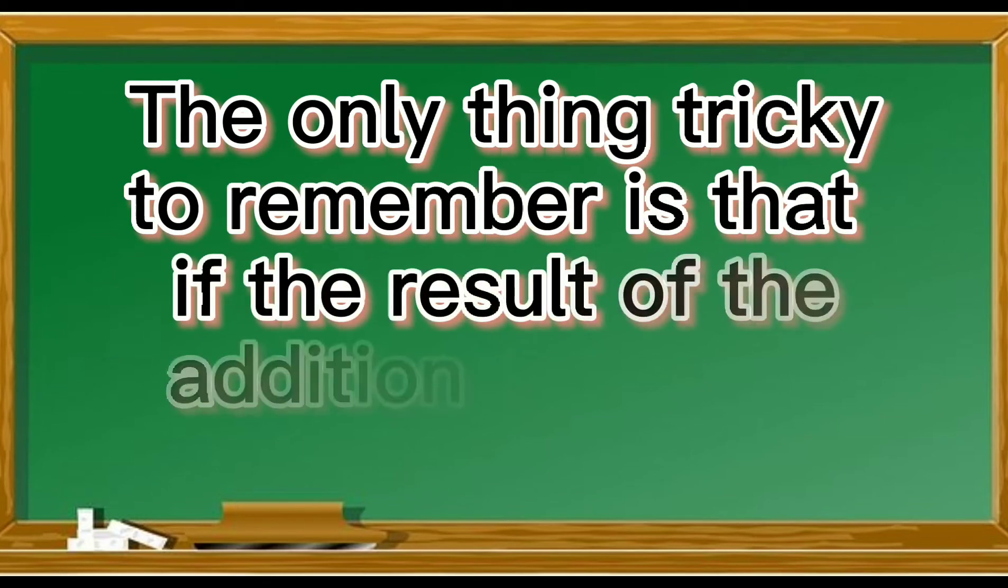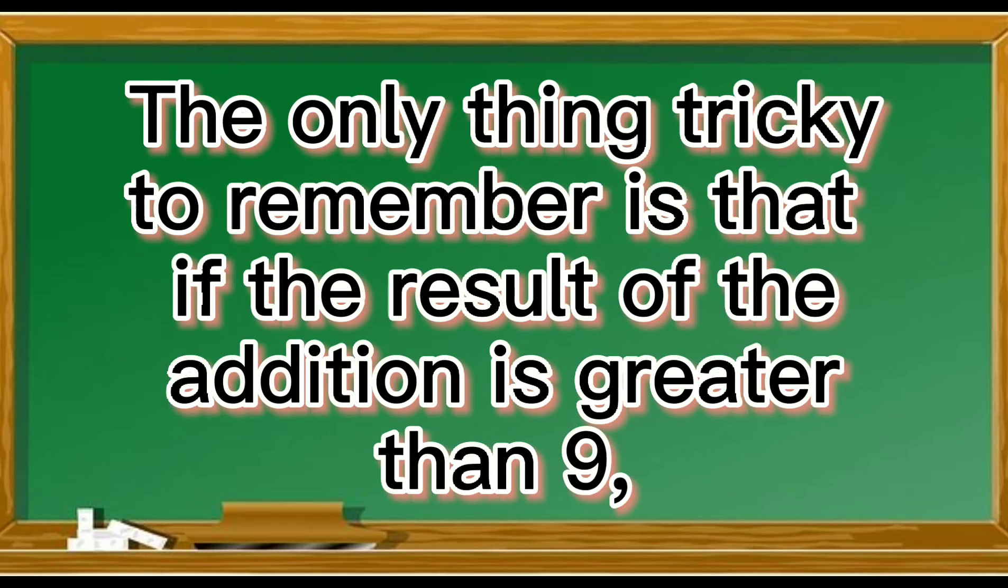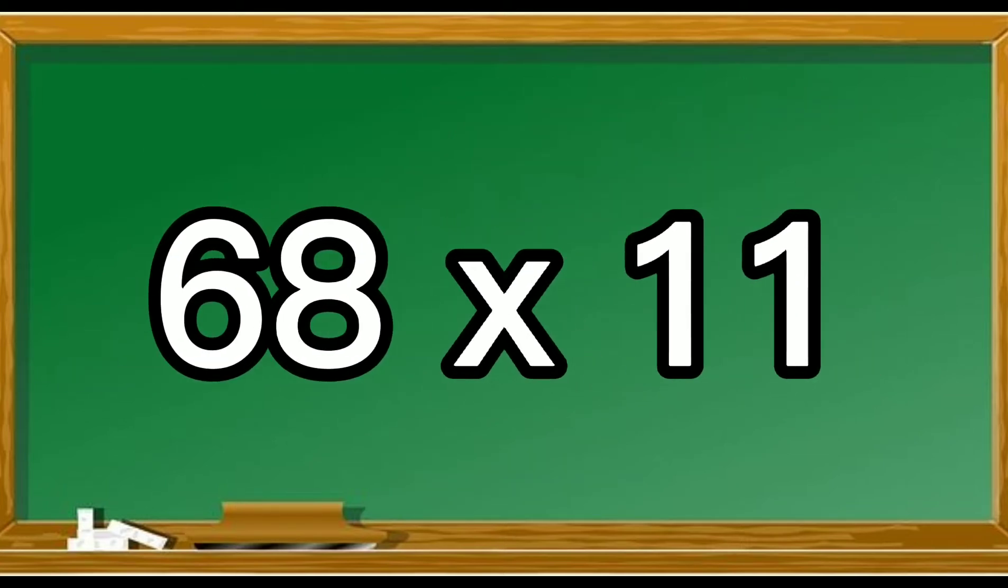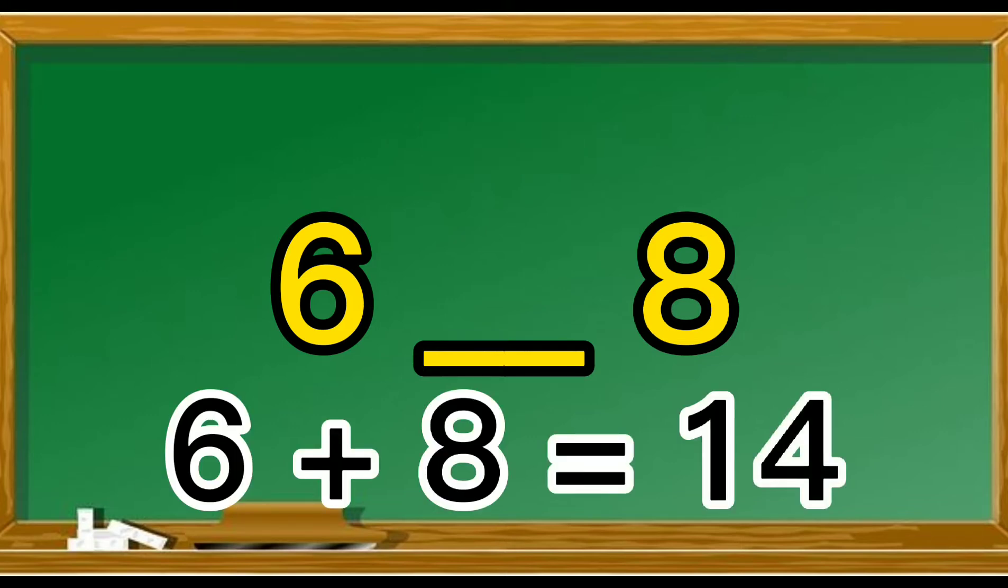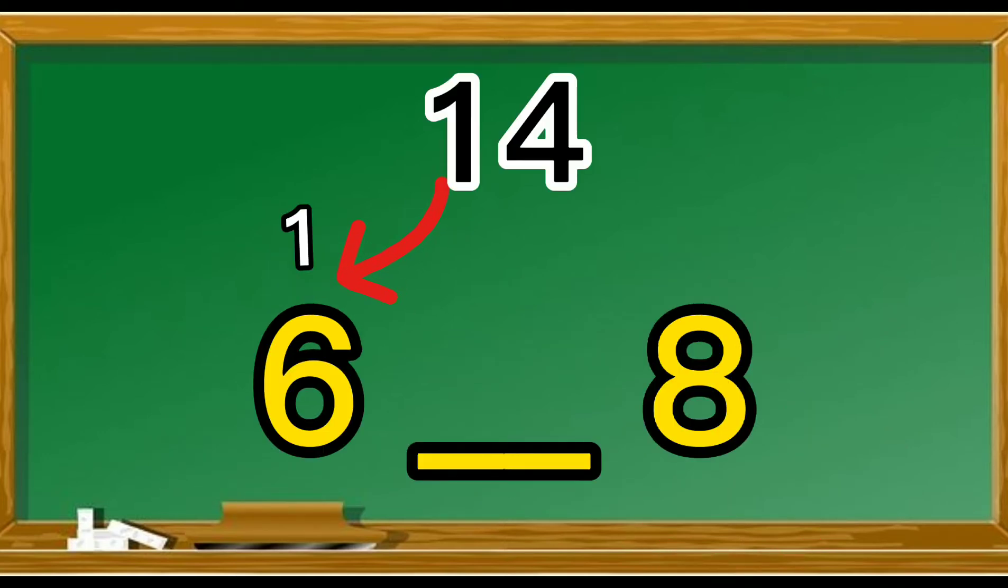The only tricky thing to remember is if the result of the addition is greater than 9. For example, 68 times 11. Again, we will separate the first and last digits. If the sum of the two digits is greater than 9, carry the one over to the tens digit, and you need to stick the remaining digit between the two original numbers.